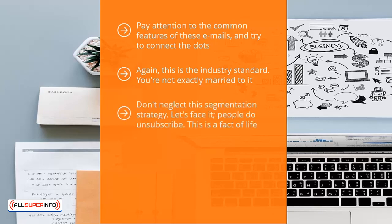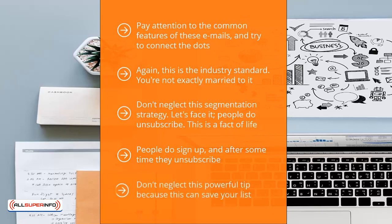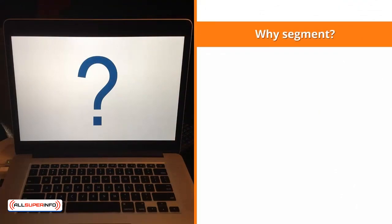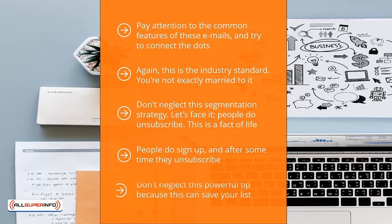Don't neglect this segmentation strategy. People do unsubscribe — this is a fact of life. Don't think that just because you work hard to offer the right incentives to the right people that they would remain loyal to your list. However, you can reduce your unsubscribe rate by simply asking people who wish to unsubscribe to change the update frequency of their membership on your list. Depending on your list automation software, you can offer list members a choice as to how frequently you will send them updates. This can save your list and allow you to convert them into buyers later.